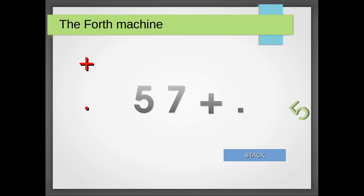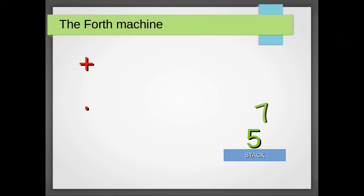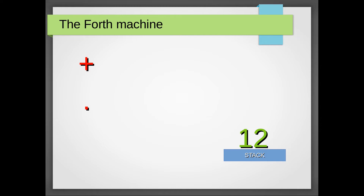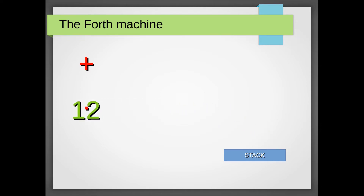So what happens? Five isn't a command, it's a number, so it ends up on the stack. Seven isn't a command, it's a number, so it ends up on the stack as well. Plus is a command — it takes five and seven from the stack, adds them and places twelve on the stack. Dot is a command. It takes twelve from the stack and displays it.